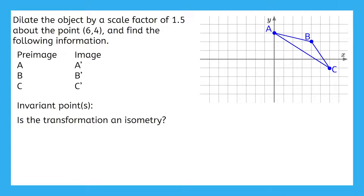Now we're moving on to use a coordinate plane to complete our dilations. You can set that straight edge, compass, and ruler aside. This problem says to dilate by a scale factor of 1.5 about the point (6, 4) and find the following information. This means that the point (6, 4) is the center of dilation. First, always draw the center of dilation along with the lines connecting the vertices to the center of dilation.